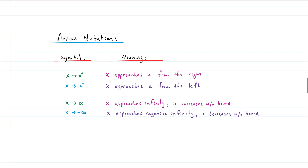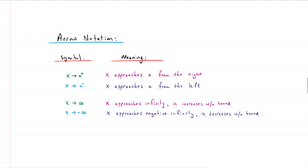Let's talk about arrow notation, which is used in the definition of asymptotes. X with a right arrow and then A with a plus superscript means X approaches A from the right — the positive side. X with a right arrow and A with a negative superscript means X approaches A from the left. X with a right arrow and the infinity symbol means X approaches infinity, or X gets bigger without stopping. And X approaching negative infinity means X decreases without bound.